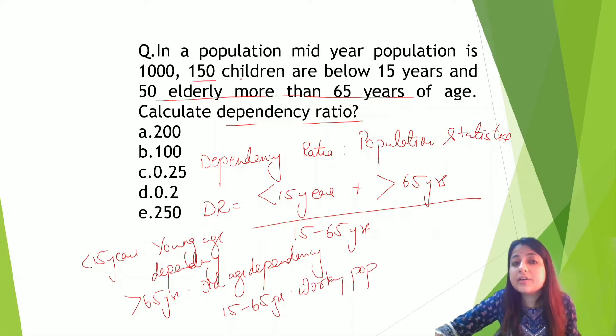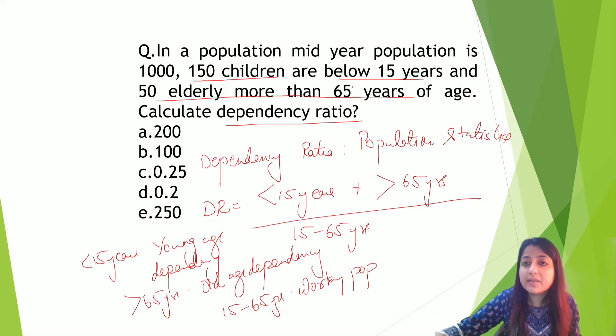How many children or how many are below 15 years over here? Here it is 150. 150 are children below 15 years. 150 plus how many are above 65 years? 50.